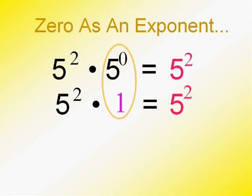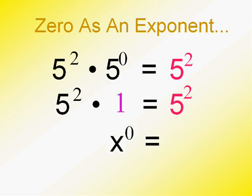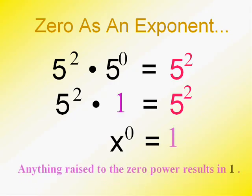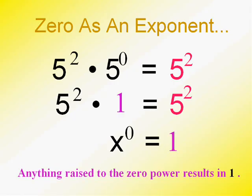5 to the 0 is 1 — not 5 to the 1, it's 1. And in fact, any number to the 0 power has got to result in the value 1.